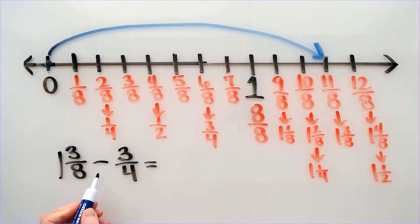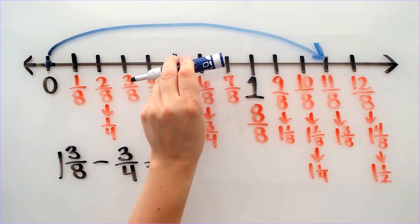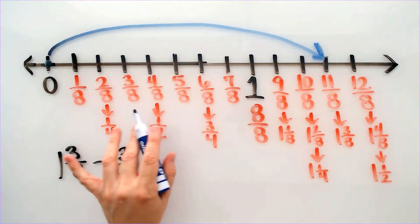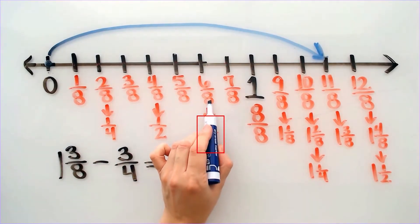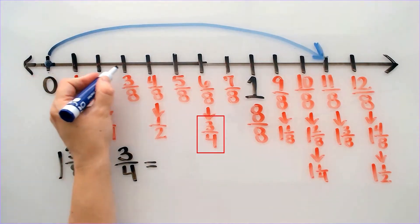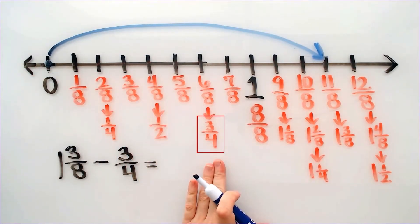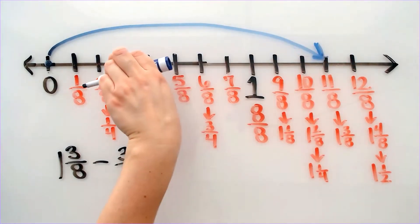Now if you look at my problem, I am subtracting. Since I am subtracting, I am going to move back to the left. So here is 3 over 4. Well if I look on my number line, 3 over 4 is right here, which is the same as 6 over 8. So this whole part right here is 6 over 8, which I am subtracting. So I am going to go to the left 6.